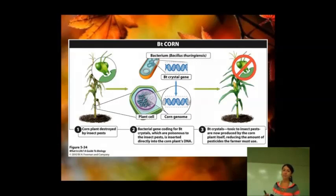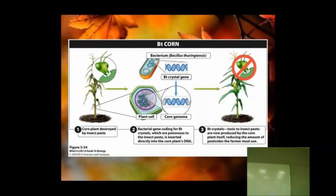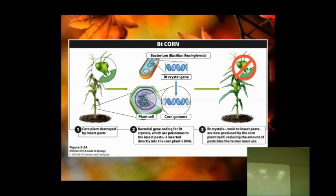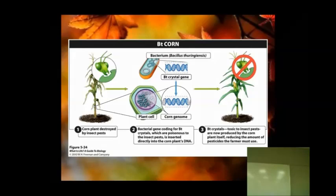Here's one great example of an insecticide genetically woven into a plant. Here we've got a corn plant that was being destroyed by insects. Scientists have taken a bacterium and woven a BT crystal gene into the bacterial DNA — that circular DNA inside the bacteria. They then take this plant cell and put the gene of interest from the bacteria into the corn genome. The bacterial gene codes for BT crystals, which are poisonous to insect pests.